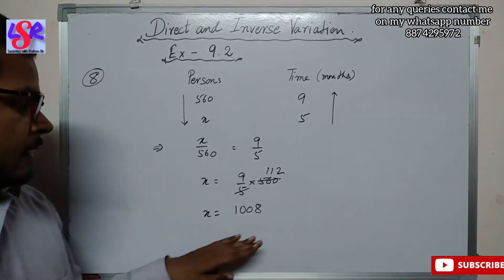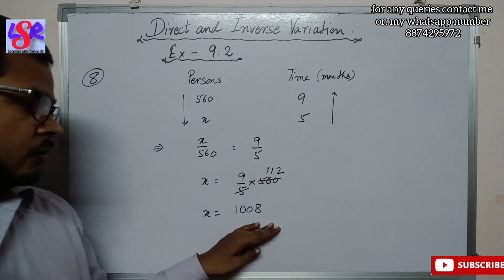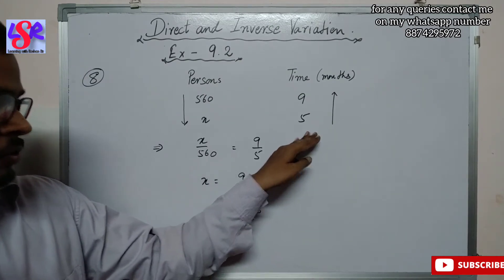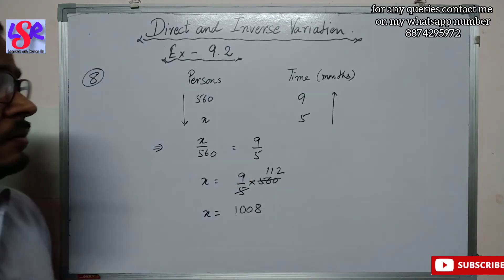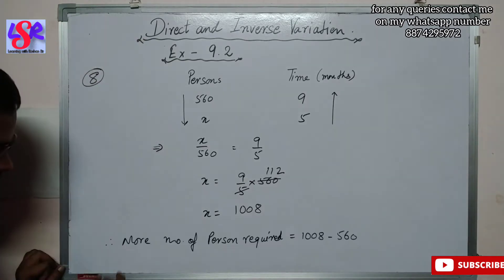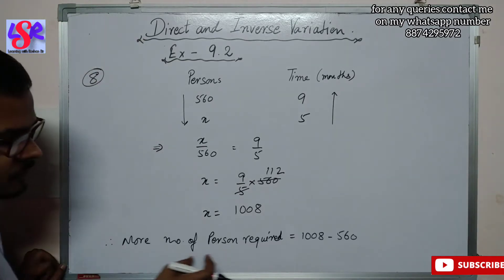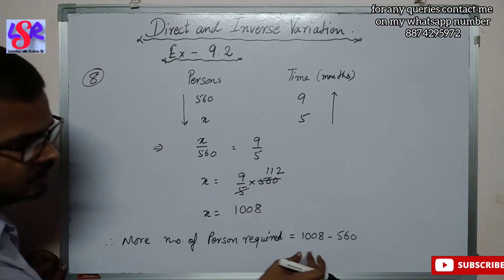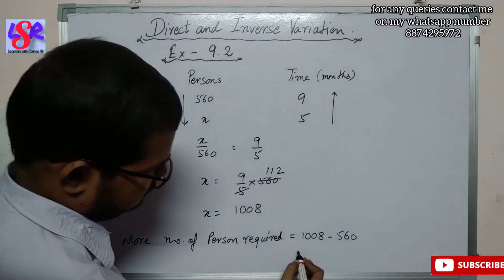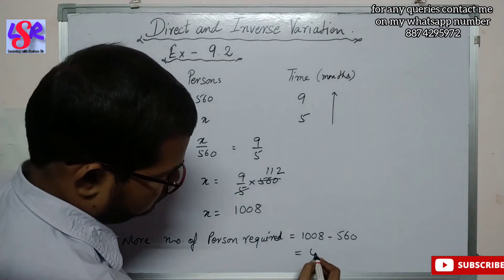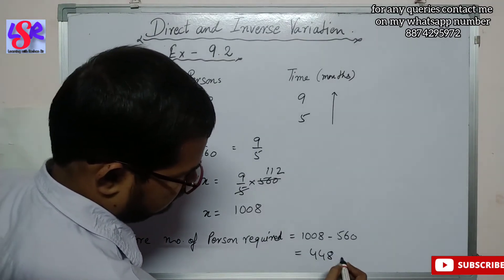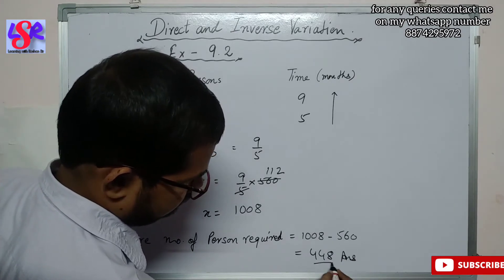This is the number of persons required to complete the work in 5 months. Therefore, the more number of persons required = 1008 − 560 = 448 as the answer.